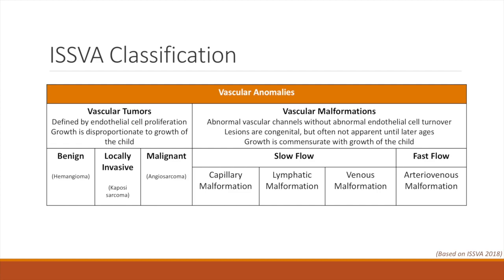Vascular malformations are further defined by the flow of the malformation. Capillary, venous, and lymphatic malformations are slow flow lesions, whereas arteriovenous malformations are fast flow. Of course, vascular malformations may be mixed type. However, in these cases, often one type predominates, and for the purpose of this talk, we will treat these categories as separate.